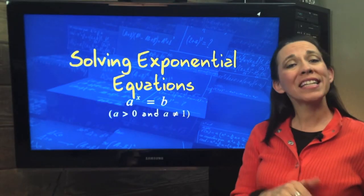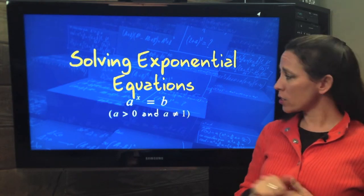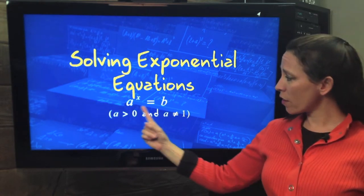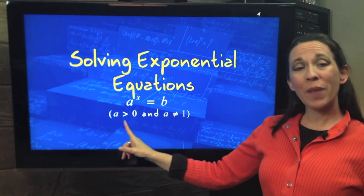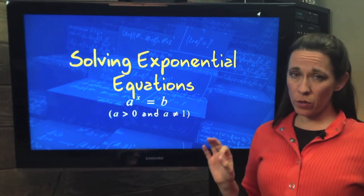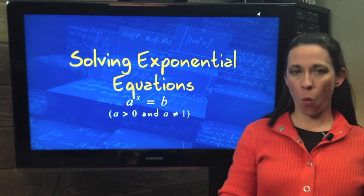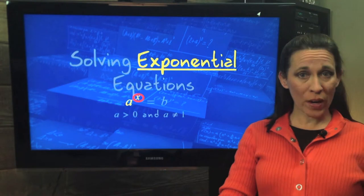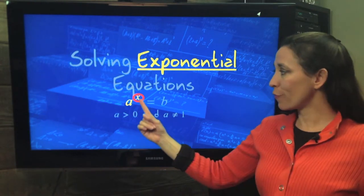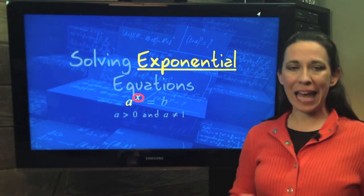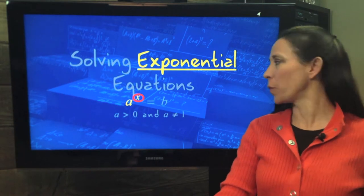Hi. Now we're going to take a look at solving exponential equations. Here's the generic form: a to the x equals b. Remember, your base has to be greater than zero and it cannot equal one. What makes an equation exponential? Your variable is in the exponent position — hence exponential.